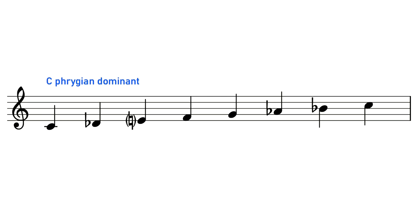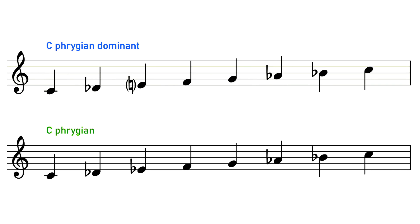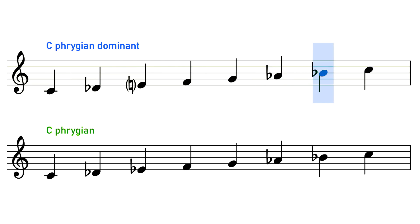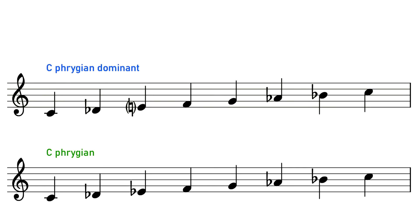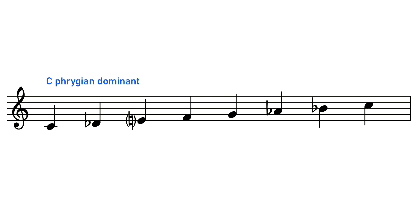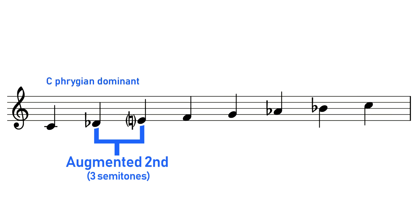The Phrygian Dominant Scale, or the Phrygian Dominant Mode, is just like the regular Phrygian Scale, however it has a major third rather than Phrygian's usual minor third. As you can hear, this scale has an intriguing, exotic, mysterious sort of sound, and a lot of that sound comes from the unusual minor third — or more accurately, augmented second interval — between these two notes.